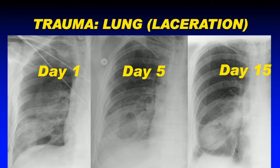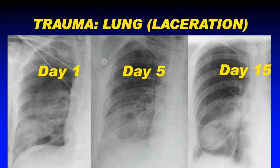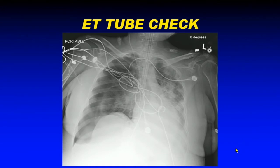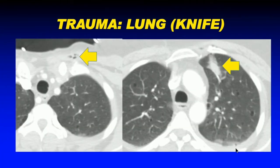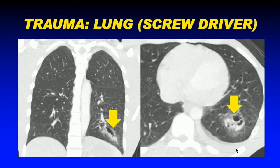On chest X-ray, consolidations and ground glass attenuation go away over days, while pneumatoceles — the laceration component — fill with fluid, organize, and may take months to resolve, particularly longer in intubated patients. A patient who had post-endotracheal tube evaluation in the trauma setting showed a large pneumothorax with a tension component; the endotracheal tube had gone past the carina into the right main bronchus, and a barotrauma diagnosis was made. A patient stabbed with a screwdriver in the left lung base showed lung laceration with a projectile tract visible as consolidations.